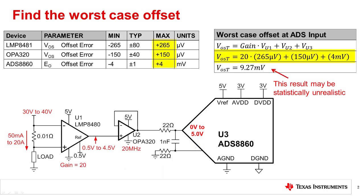A common approach is to take the maximum limit for each of the three devices and add them directly to find the worst case offset. However, this calculation assumes that all three devices have a worst case offset at the same time. What is the statistical likelihood that all of these worst cases line up at the same time? We will take a look at this in the next few slides.